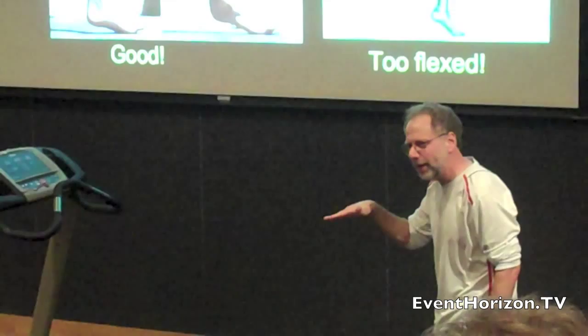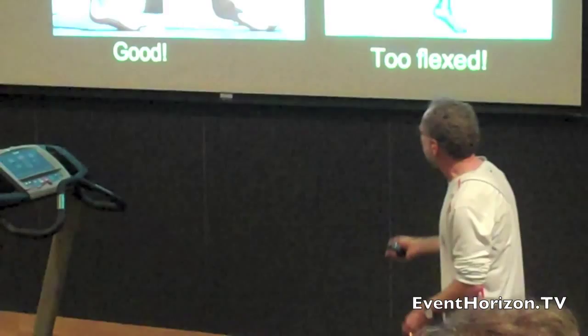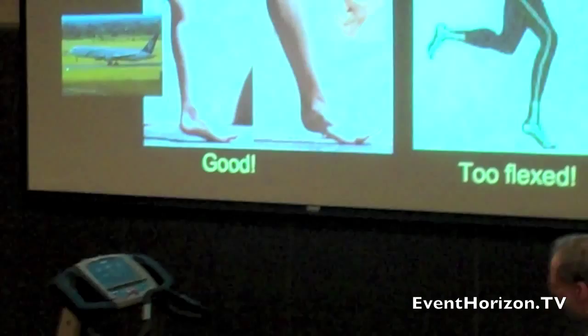So, this is a forefoot striker who's running well. Nice, low angle, fairly. And it's actually slightly high compared to some of the really best forefoot runners. This is viewed from the medial side, this is viewed from the lateral side.